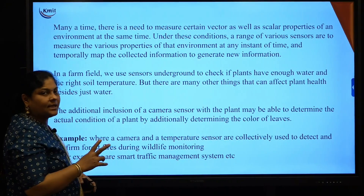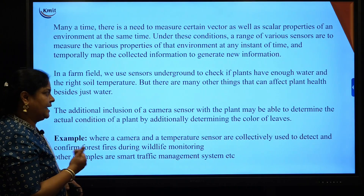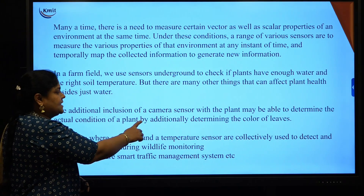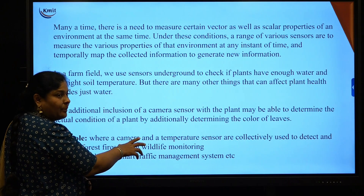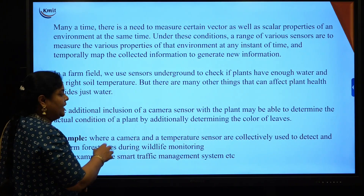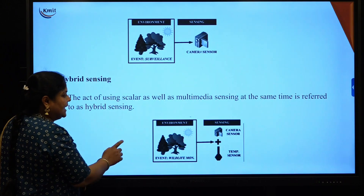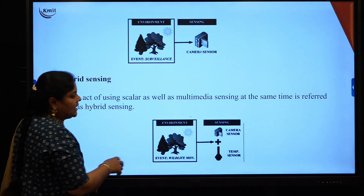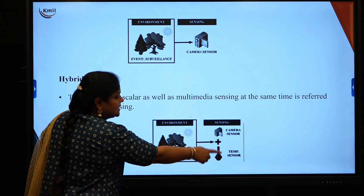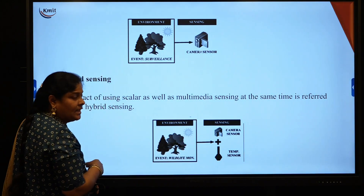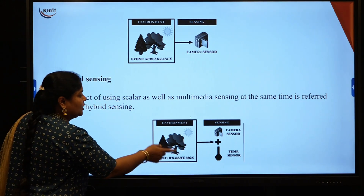In agriculture, we place soil moisture and temperature sensors to see plant health. Additionally, a camera sensor is placed to determine the condition of the plant by the color of the leaves — detecting plant health. So we are calculating not only scalar values but also vector values. The temperature sensor is the scalar sensor and the camera sensor is the vector sensor — both placed in one environment, such as for detecting fire in wildlife monitoring.